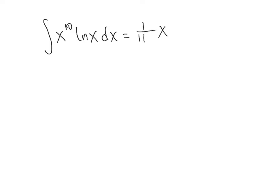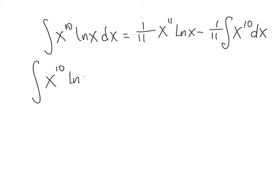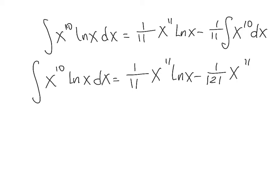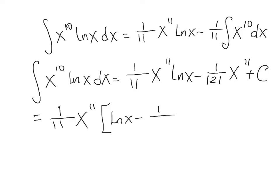It equals one eleventh x to the eleventh times natural log of x minus one eleventh times the integral of x to the tenth dx. The integral on the right is very basic, so the final answer is one eleventh x to the eleventh times natural log of x minus one over 121 — which is 11 times 11 — times x to the eleventh, plus C. We can further simplify by factoring one eleventh x to the eleventh out, leaving natural log of x minus one eleventh in brackets, plus C.